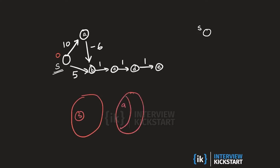We insert a and b into the priority queue with distance values of 5 and 10 respectively. In the next step we pull out the node with the smallest priority value, which is b. We make b the child of s in the shortest path tree, so b gets a final distance value of 5.